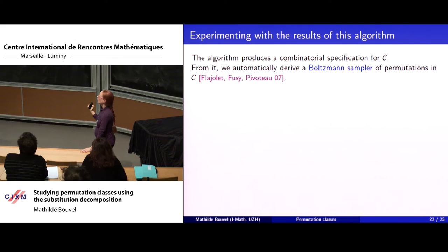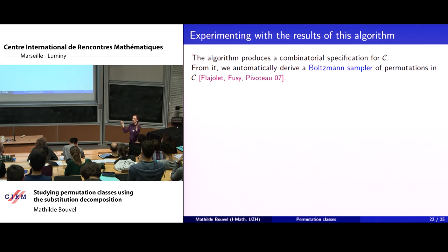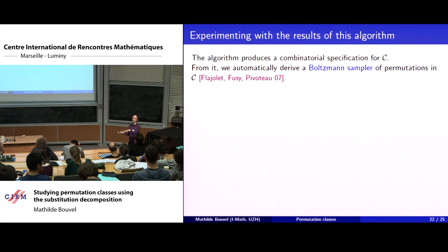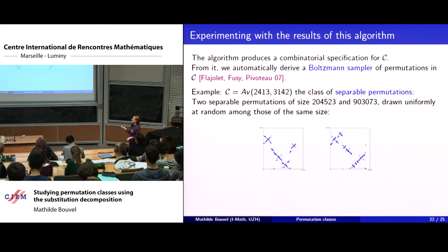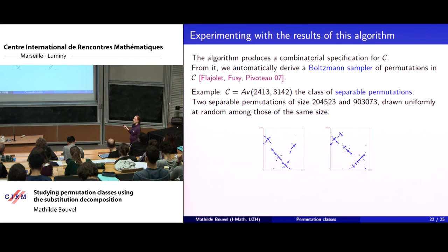Now that we have an algorithm — given a finite basis, if the class has finitely many simple permutations, it outputs a combinatorial specification — from that you can automatically have a random sampler, for instance using Boltzmann sampling, for permutations in your class. You experiment and plot diagrams of large permutations in the class. These two pictures are diagrams of large separable permutations. In the case of separable permutations you don't need the algorithm to find the combinatorial specification since you have it, but you can play the same game in other classes.